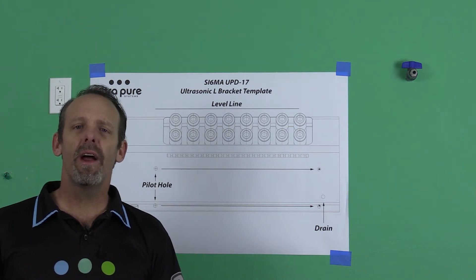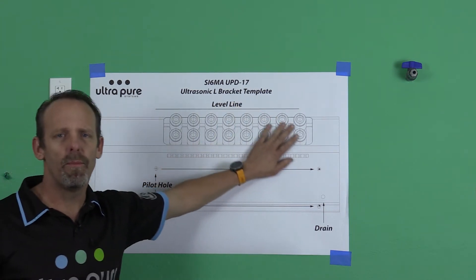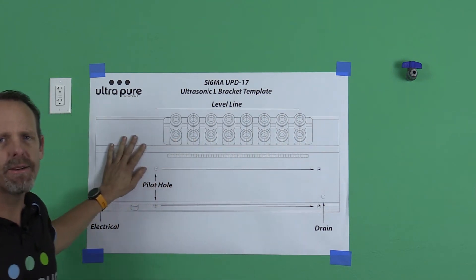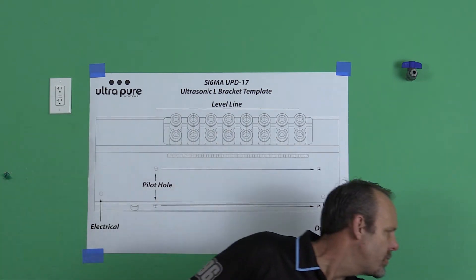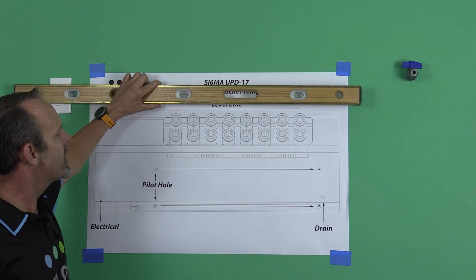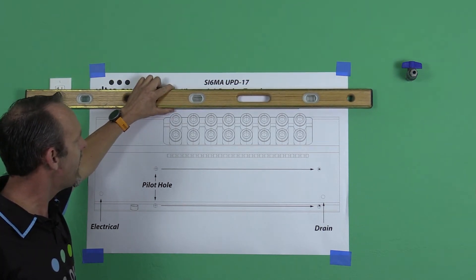Once you know where the humidifier is going to go, you could tape the template onto the wall. Make sure that it is rolled out flat. And you're going to need a torpedo level or a four foot level, which we use.